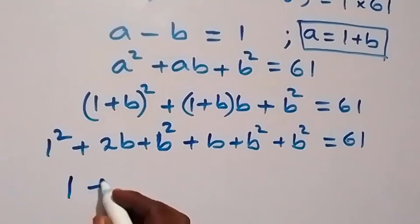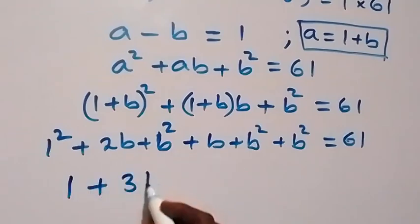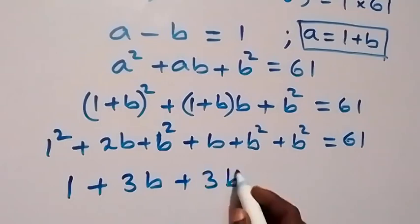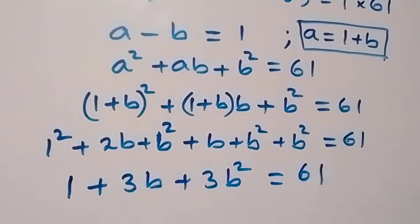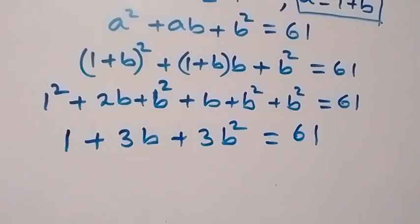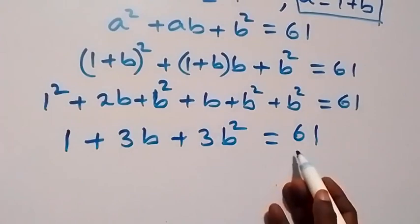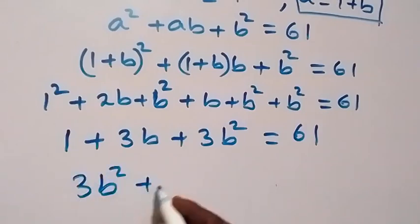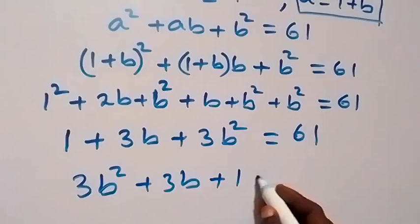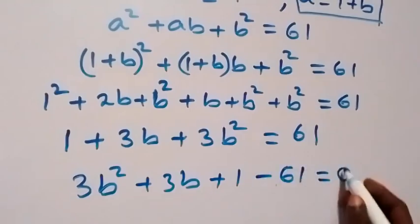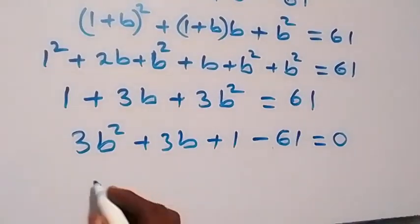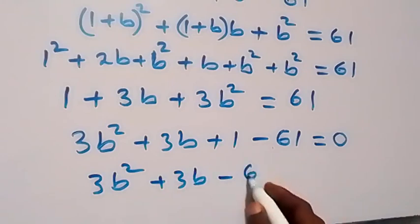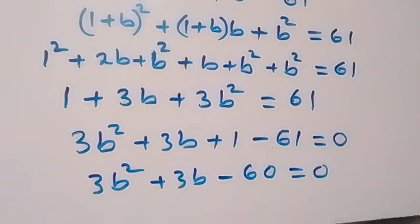Collecting terms: 1 plus 2b plus b, that gives us 3b, plus b squared plus b squared plus b squared, giving 3b squared, equals 61. Rearranging, we have 3b squared plus 3b plus 1 minus 61 equals 0.